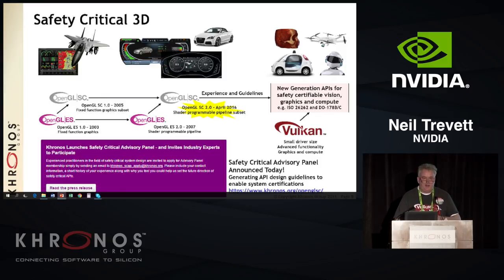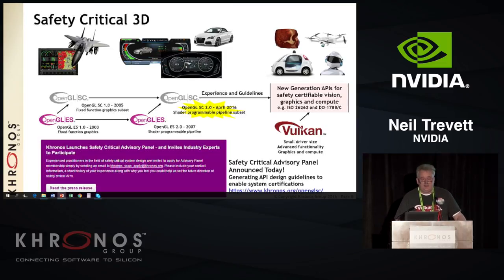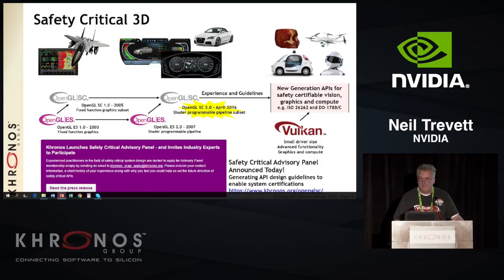There's an email on the Khronos web page. If you think you'd like to help us set the direction for API design with safety criticality in mind, please get in contact with us, or talk to us after the party. Buy me a beer and we'll let you on the panel. Thanks a lot.